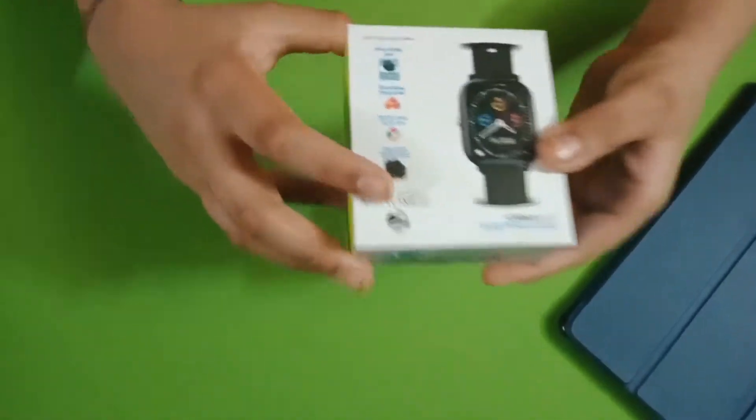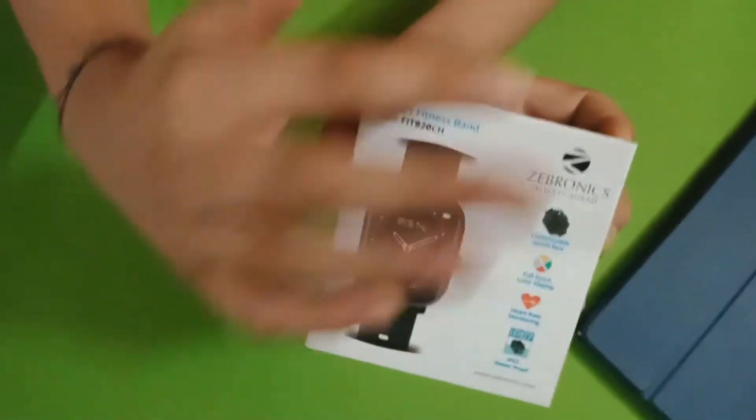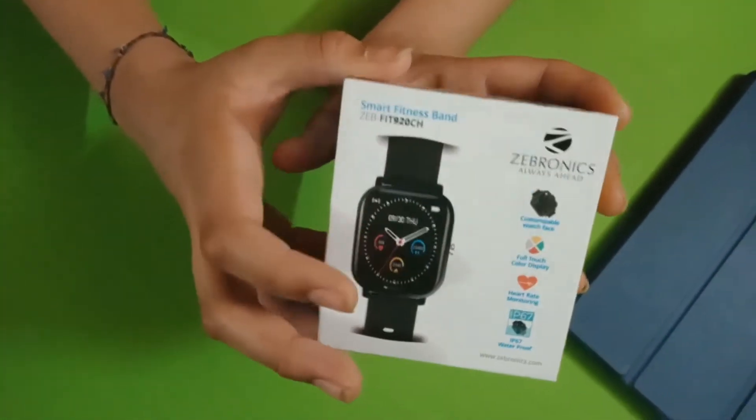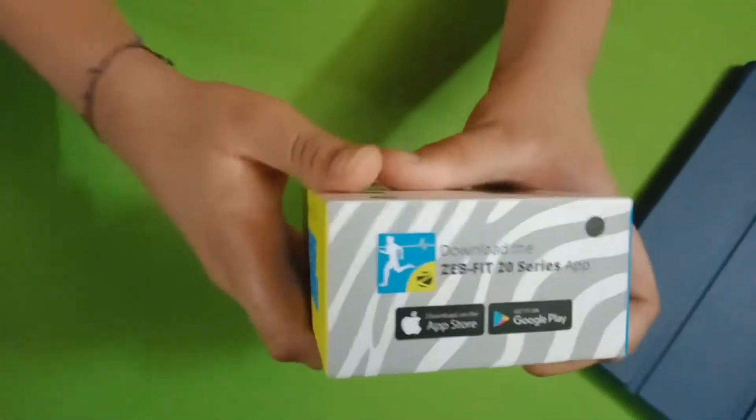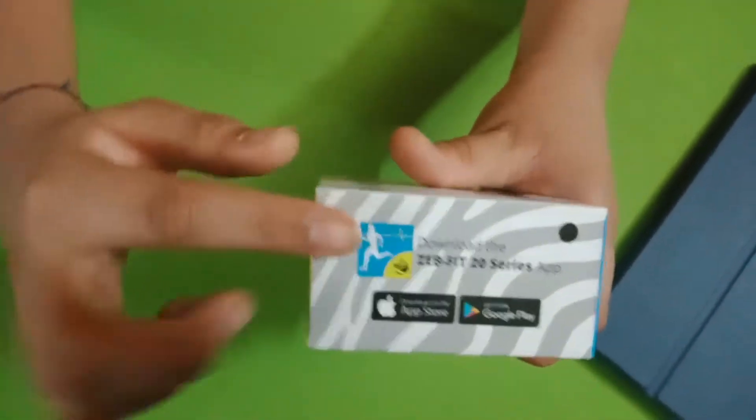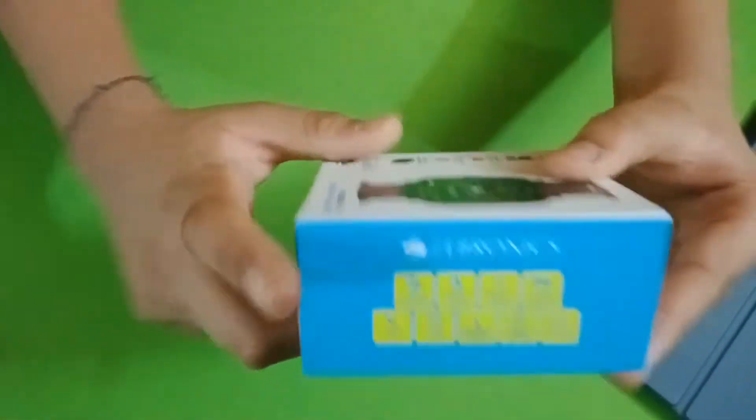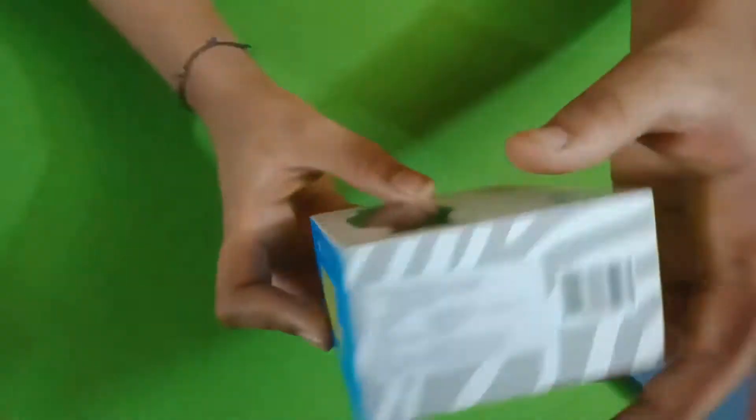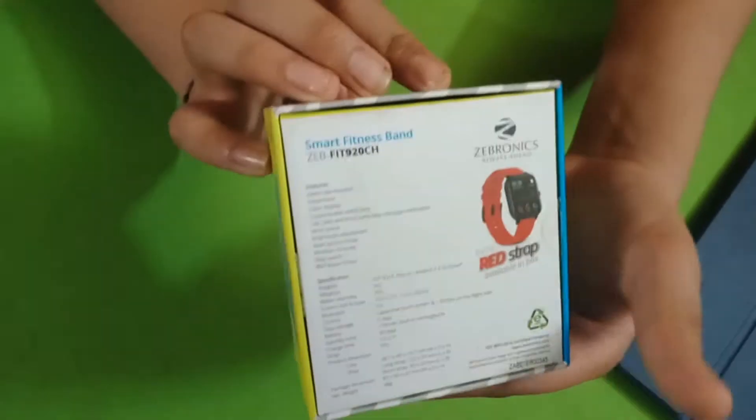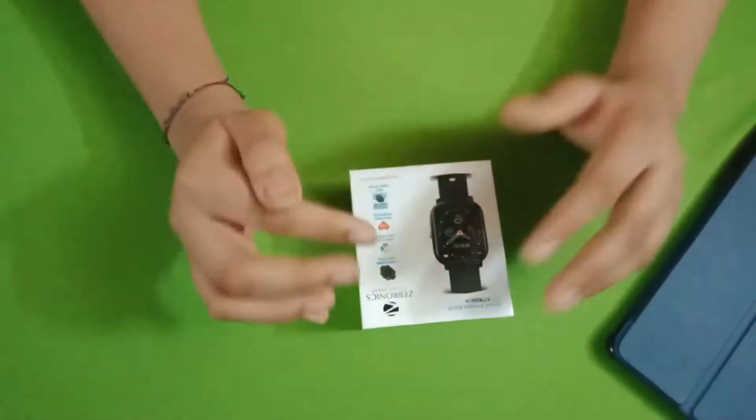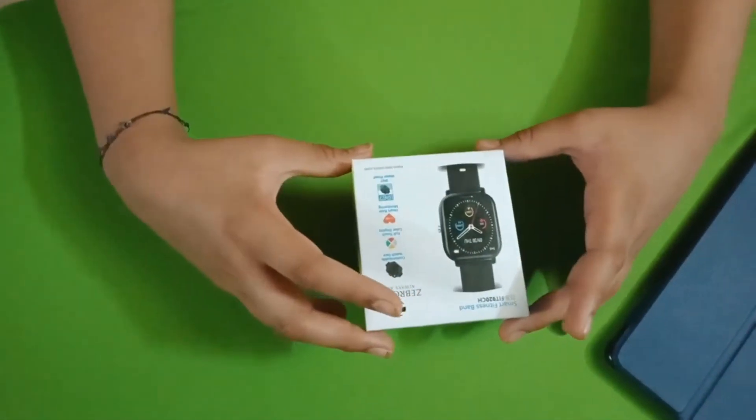So here is the box of the watch. This is the Zebronics logo and the picture of the watch itself. Here is the app you will need to download to get the watch running. And here are some specifications. There is nothing else on the box, so let's open it.